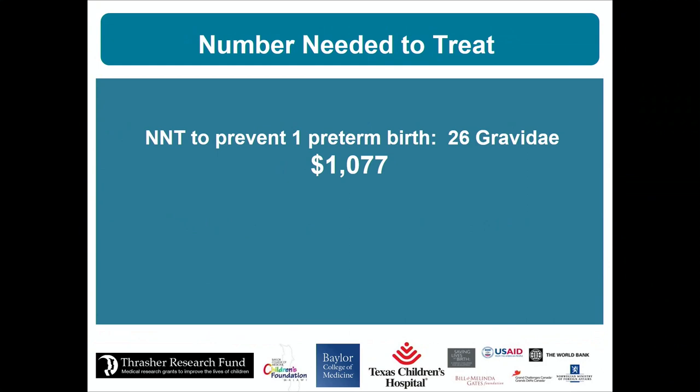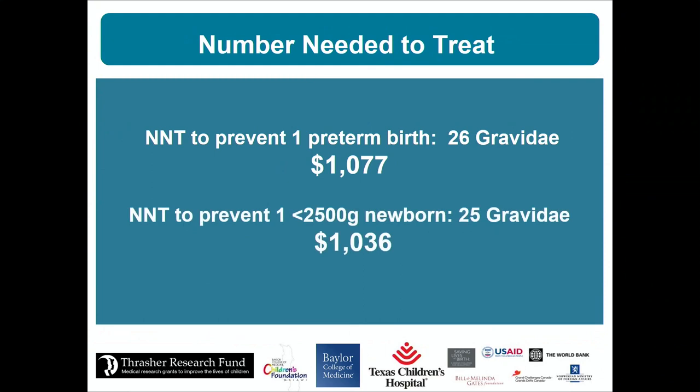The number needed to treat is 26 pregnant people to prevent one preterm birth, or 25 to prevent one low birth weight offspring — approximately $1,000 for an entire pregnancy to prevent one preterm birth. For comparison, in the US the only other intervention to prevent preterm birth is progesterone shots, which cost $2,000 per shot and are given multiple times during pregnancy.